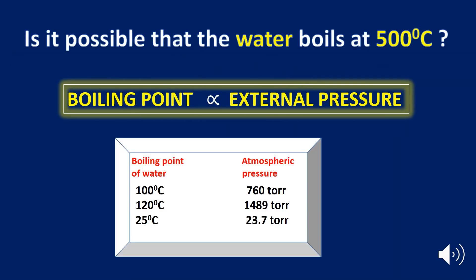What do you think — is it possible that water boils at 500 degrees Celsius? Yes, water can boil at 500 degrees Celsius because the boiling point is directly proportional to the external pressure. With an increase in external pressure, the boiling point increases, and with a decrease, the boiling point decreases.